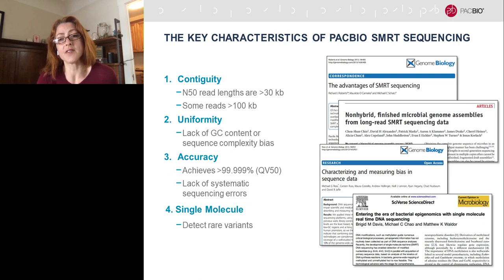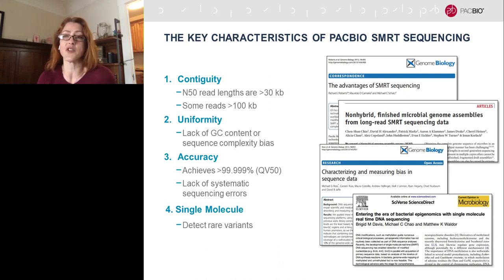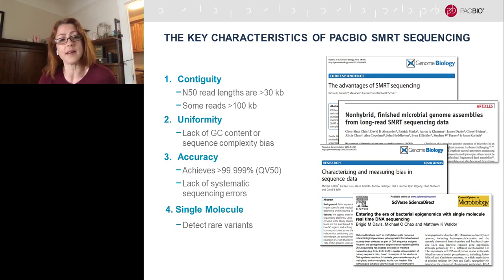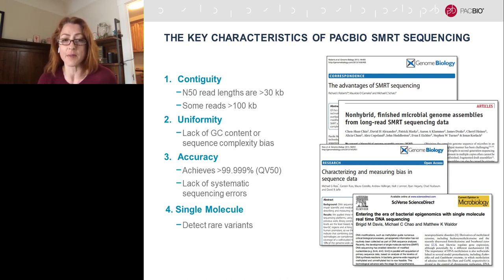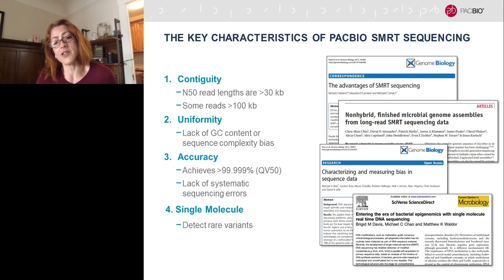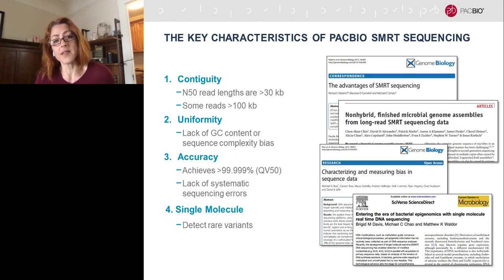PacBio SMRT sequencing is a unique kind of sequencing technology in that it has four key characteristics quite different from short read sequencing. The first is contiguity — read lengths are very long, over 30 KB in median read length, with some reads as long as 100 KB. We also have very uniform coverage of all genomic contexts, no matter what the GC or AT richness may be. We have very high accuracy and are able to achieve QV50 or 99.999% accuracy with sufficient coverage, because we lack the systematic errors introduced by PCR. And finally, PacBio SMRT sequencing is single molecule, which means we are able to detect rare variants.